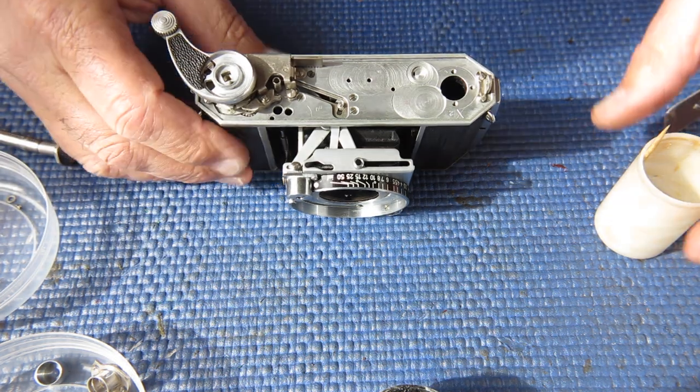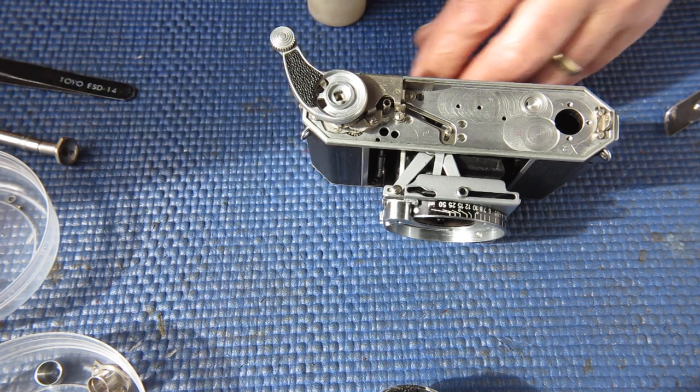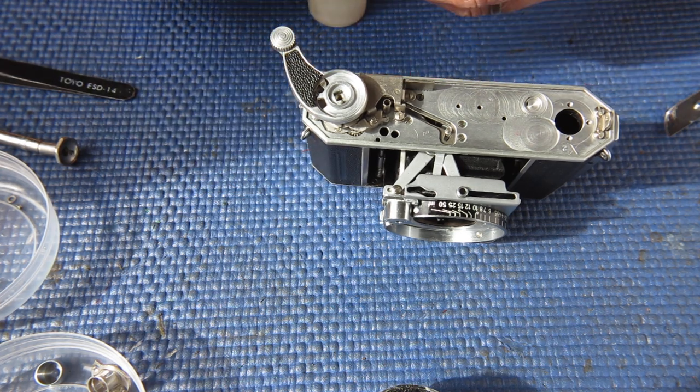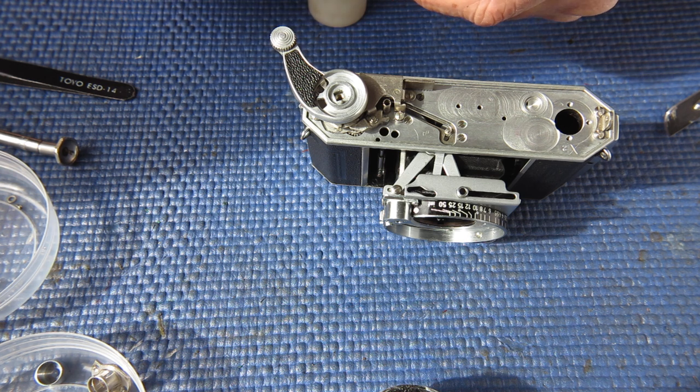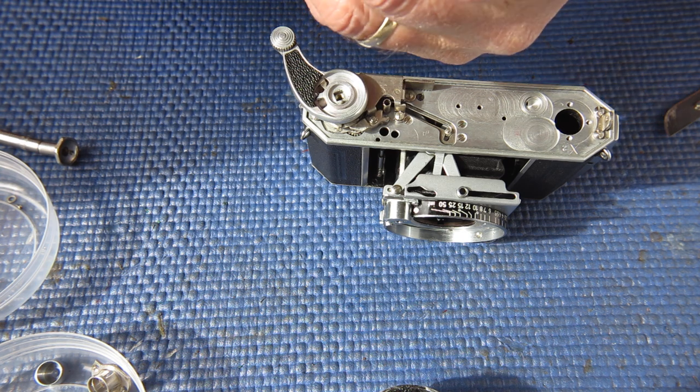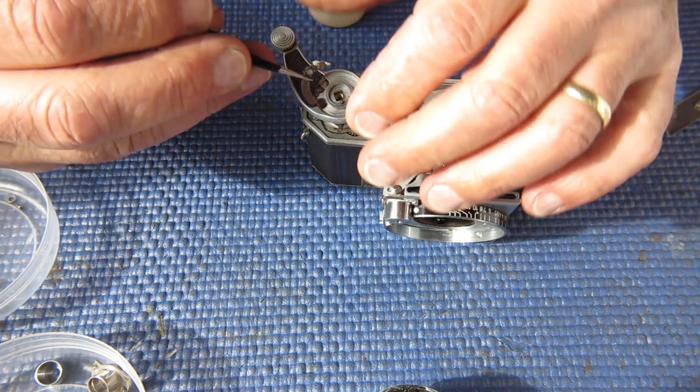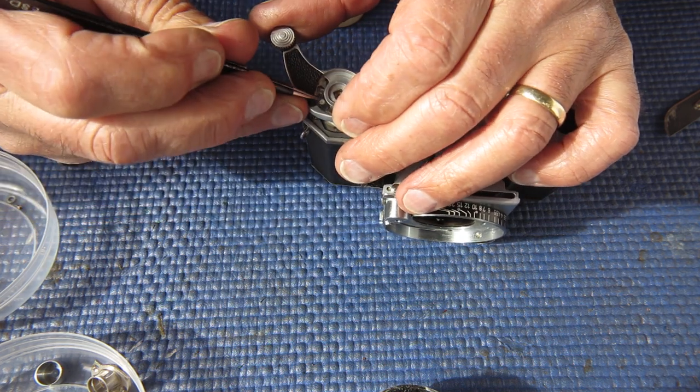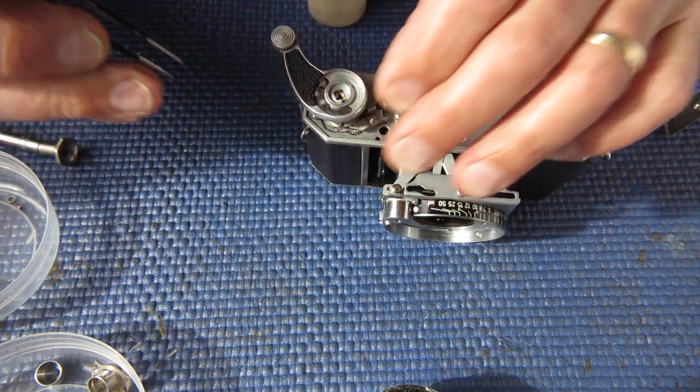There were changes to how the advance mechanism was made on the Retina 2A's and 1A cameras. This is the more common and later arrangement. They only differed slightly in detail, but this is certainly the later and more common one.